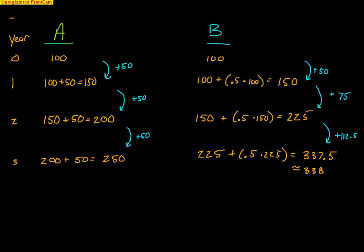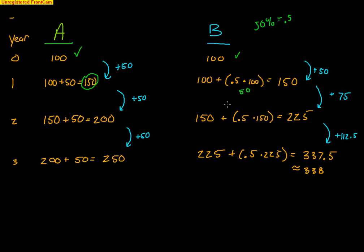Here's a little chart outlining what's happening. In year one, A has 100 and so does B. After one year, A is going to add 50 stores, so they now have a grand total of 150. B is going to add 50% of what they have — 50% as a decimal is 0.5 — so 50% of 100 is 50, giving B 150 stores as well. In the first year, both increased by 50.